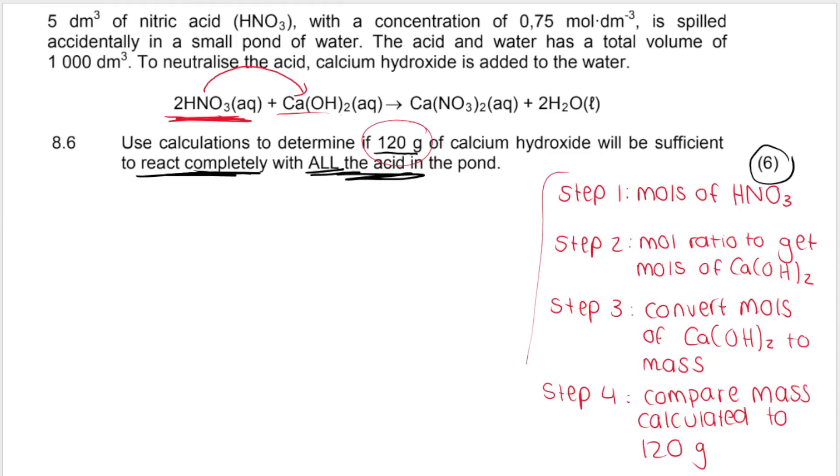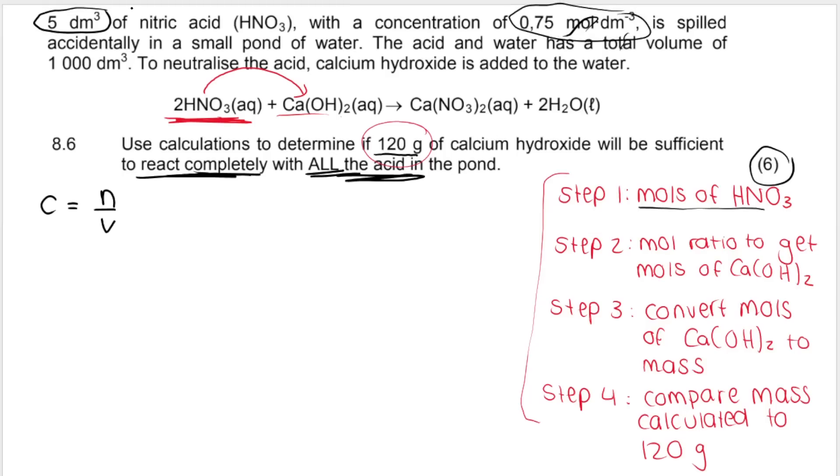So how would you do this? Well, what you would need to do is you would first need to work out the moles of my acid. Then you would need to use a mole ratio to get the moles required of calcium hydroxide and then you would convert it to mass and you can compare that mass with this mass. So here are the steps that I just mentioned and let's start with step number one. I know we already calculated the moles of HNO3. I'm just going to do it again to remind you.